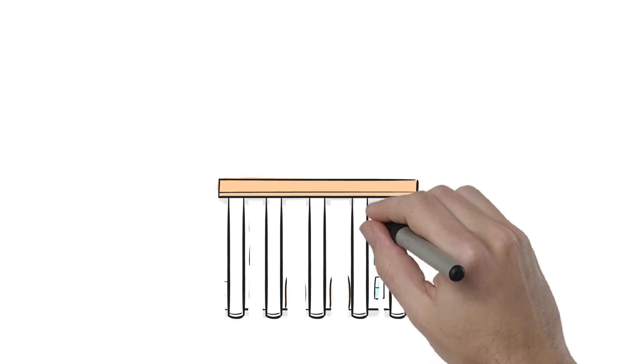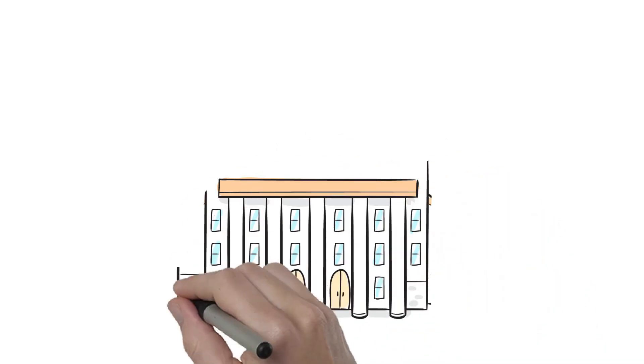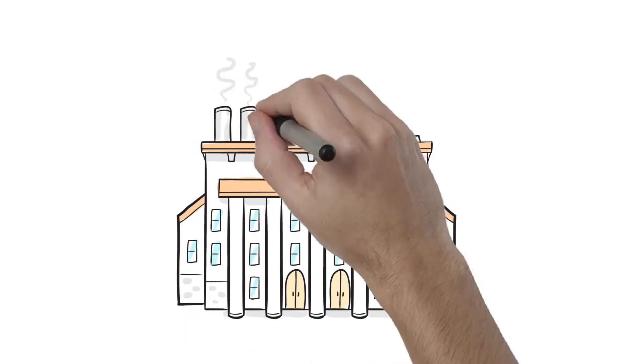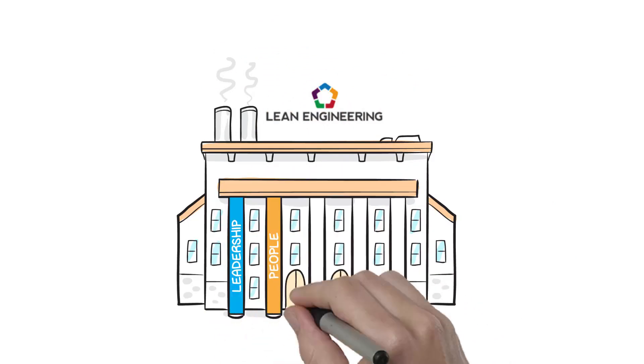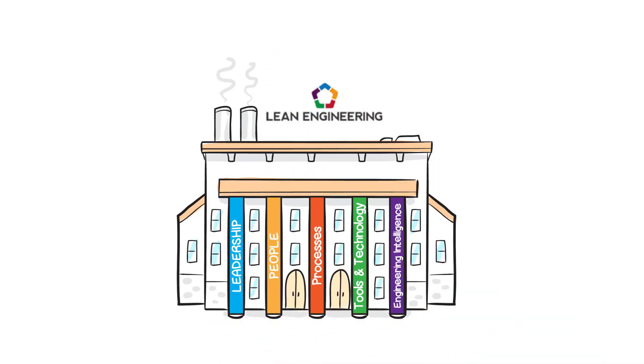As we consider the process of becoming a lean, mean manufacturing machine through pursuing lean engineering, it is best to start by breaking down the five key pillars which make up the lean engineering methodology.